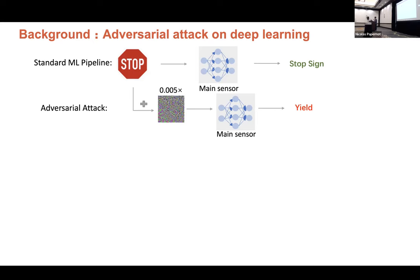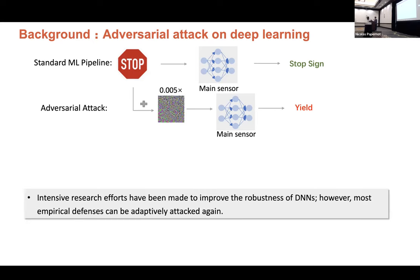And there are a lot of works have been made to improve the robustness of deep neural networks. For example, we can pre-process the input, we can use generative models to purify the input images. However, most of these empirical defenses have been adaptively attacked again. So we are thinking if we can improve the robustness of deep neural network in another way.